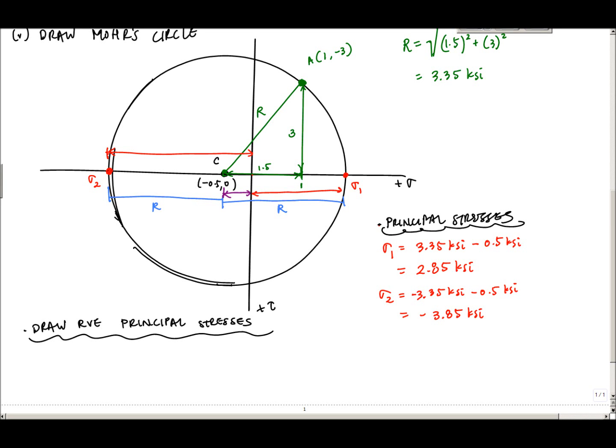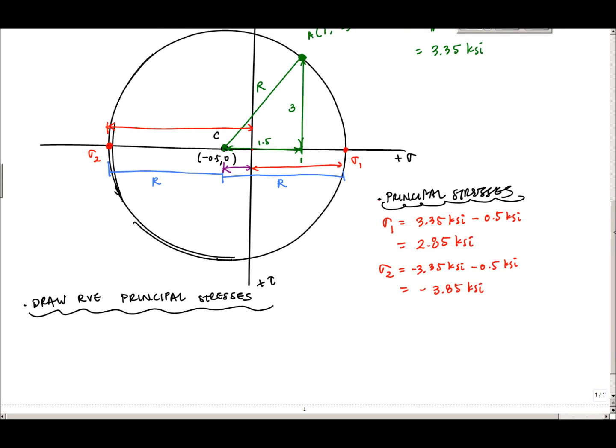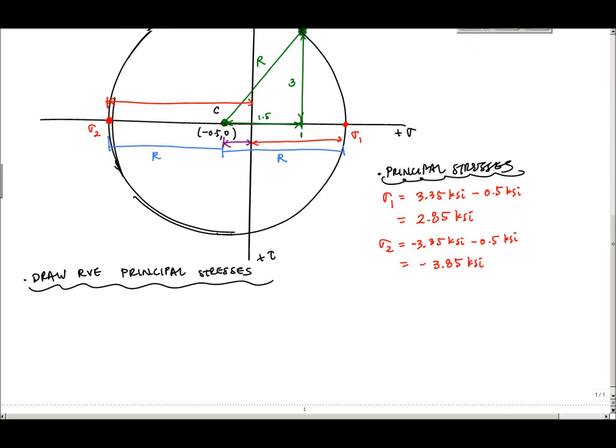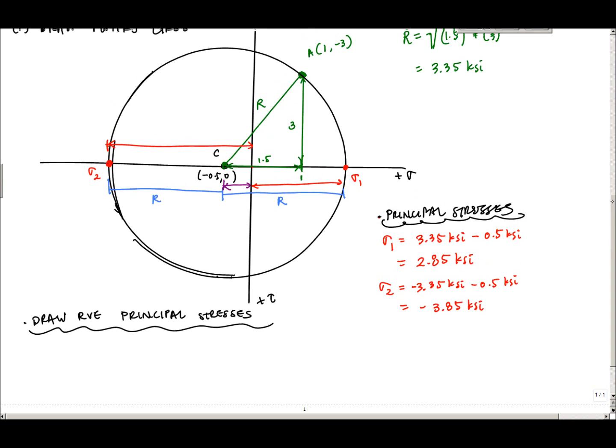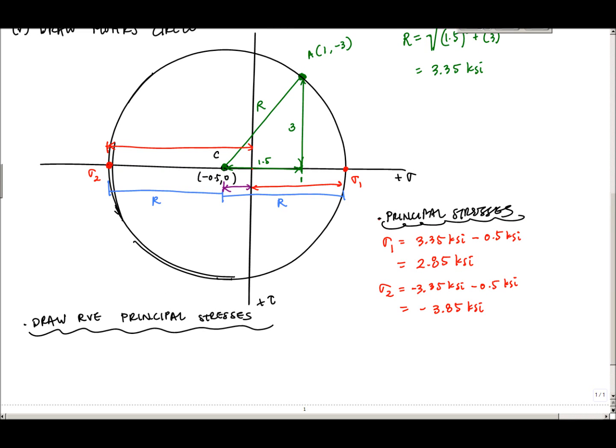Okay, so we're back, and now we're going to draw the representative volume element and principal stresses. When we drew this first point here at A, this point didn't necessarily represent the whole representative volume element. Rather, it represented the face perpendicular to x, or theta equals 0 degrees.